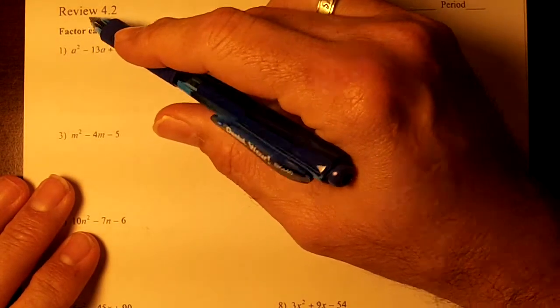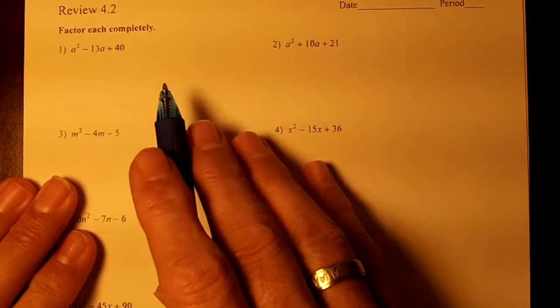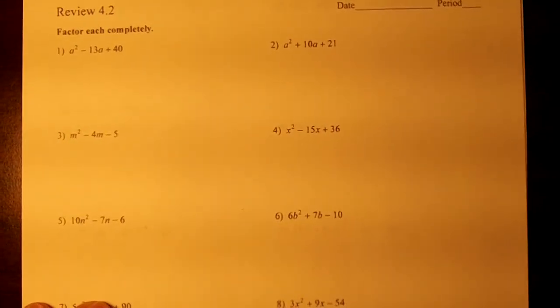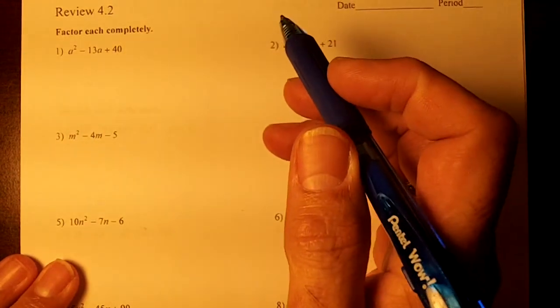Pre-AP Algebra Test 4.2 Review. We're going to factor completely all these quadratics. I'm going to do this the Tubbs-Mohr-Power way.